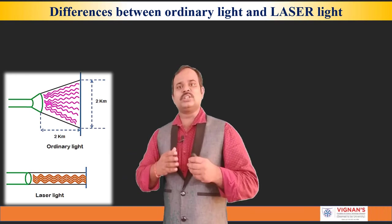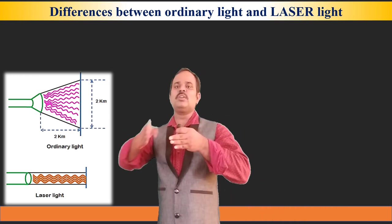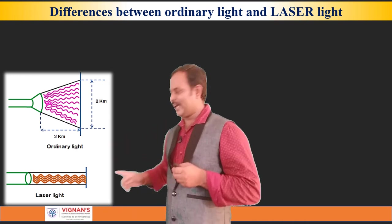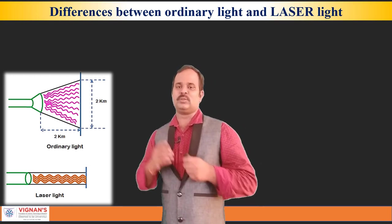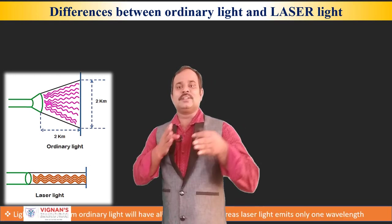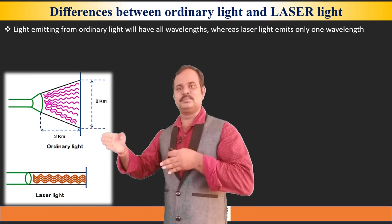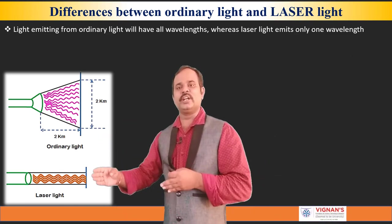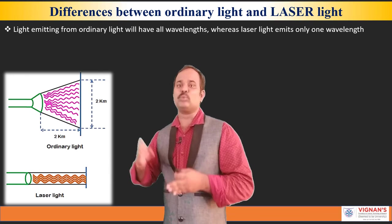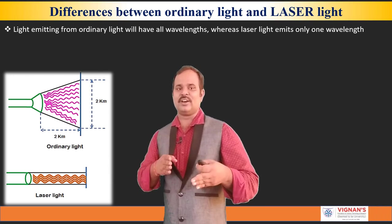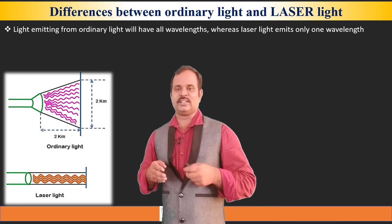As we all know that in the ordinary light, it emits all wavelengths. In the case of laser, it emits only one particular wavelength. That means, ordinary light emits all wavelengths and the laser light emits only one particular wavelength. That means, laser light is a monochromatic light and normal light is a polychromatic light.